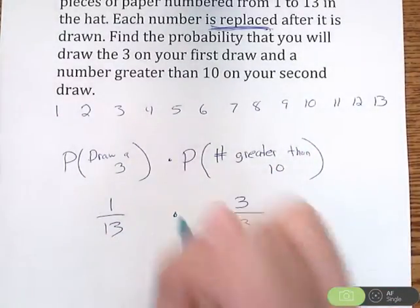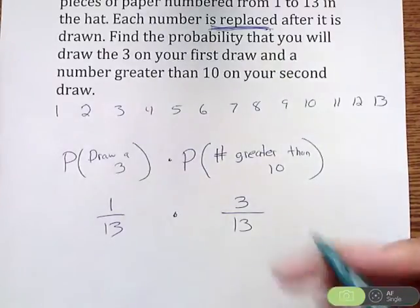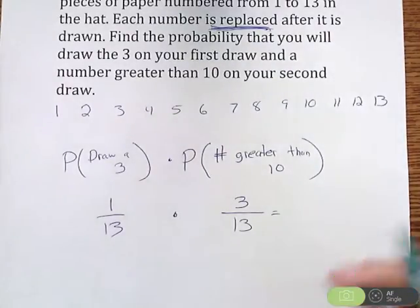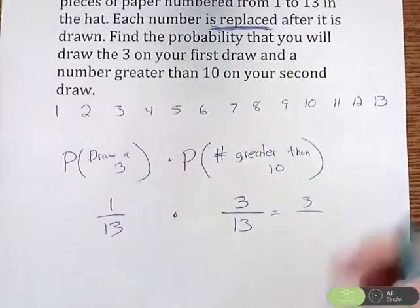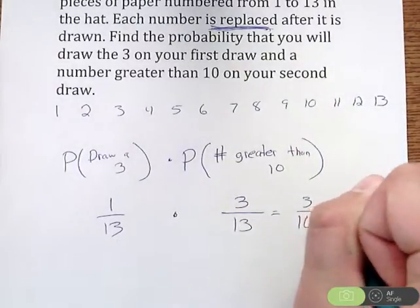Now what we need to do is multiply those two together. If you multiply the fractions together, multiply the top, you get 3 times 1, which is 3. Multiply the bottom, 13 times 13 is 169.